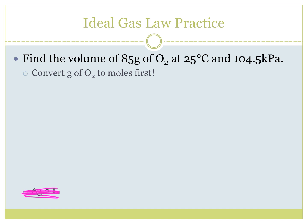Let's try the next one. This says find the volume, so this is my question mark. Find the volume of 85 grams of O2 at 25 degrees Celsius. So T equals 25 degrees Celsius, which in Kelvin will be 298 Kelvin. And what's this right here? What's that value give us? It does give us pressure. Is it the correct unit? No.